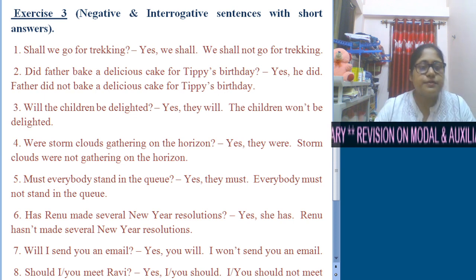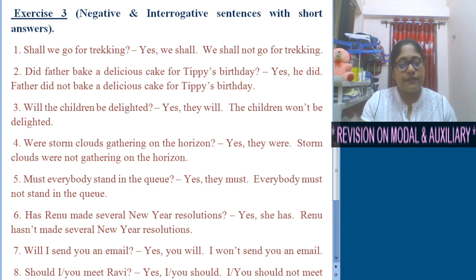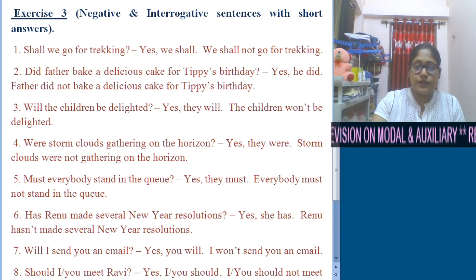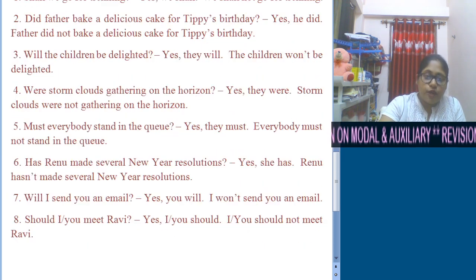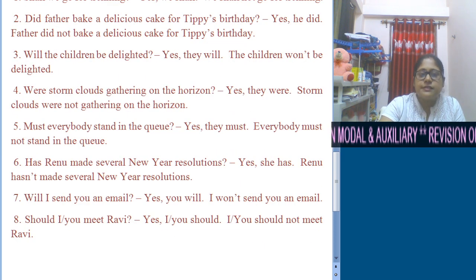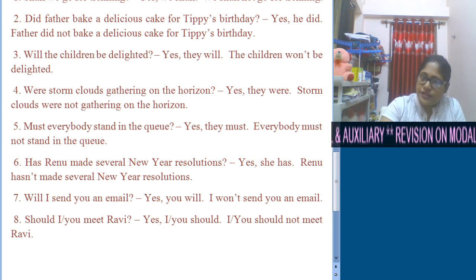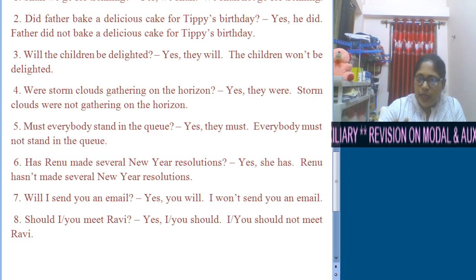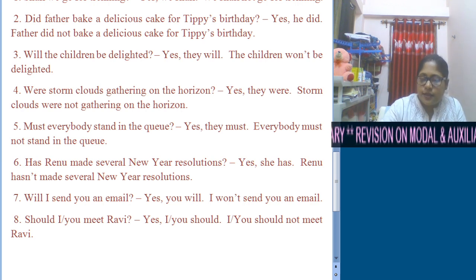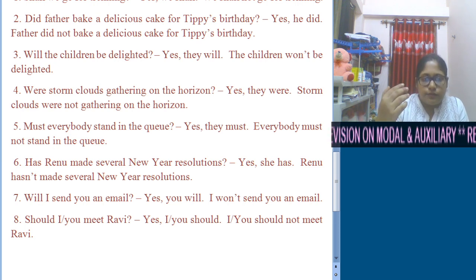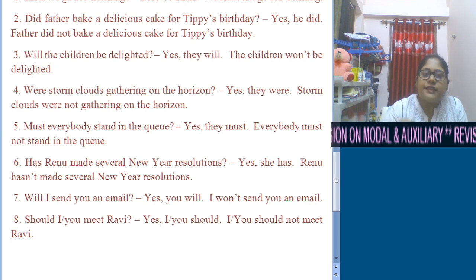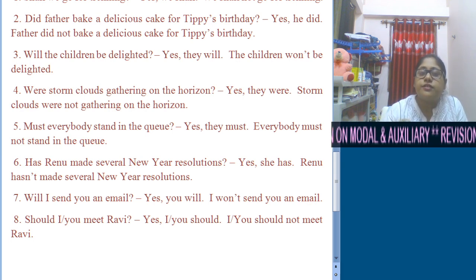Number 6: Renu has made several New Year resolutions. 'Has' comes at the beginning: Has Renu made several New Year resolutions? Short answer: Yes, she has. Here 'has' is used to avoid repetition in the short answer. Negative: Renu hasn't made several New Year resolutions.